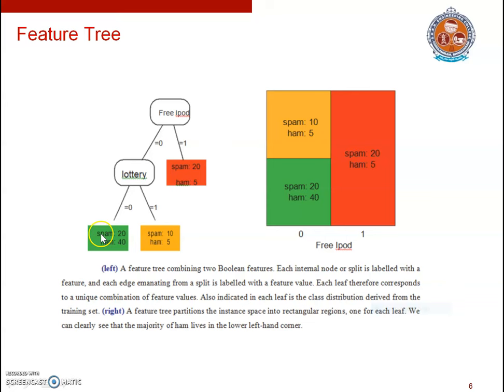In this feature tree we have three leaves. In the leftmost leaf, 16 instances belong, among them 20 belong to class spam and 40 belong to class ham. In the middle leaf, 10 belong to class spam and 5 belong to class ham. In the rightmost leaf, 20 belong to class spam and 5 belong to class ham. So in this spam email detection dataset, the feature tree has divided all the instances into three groups.